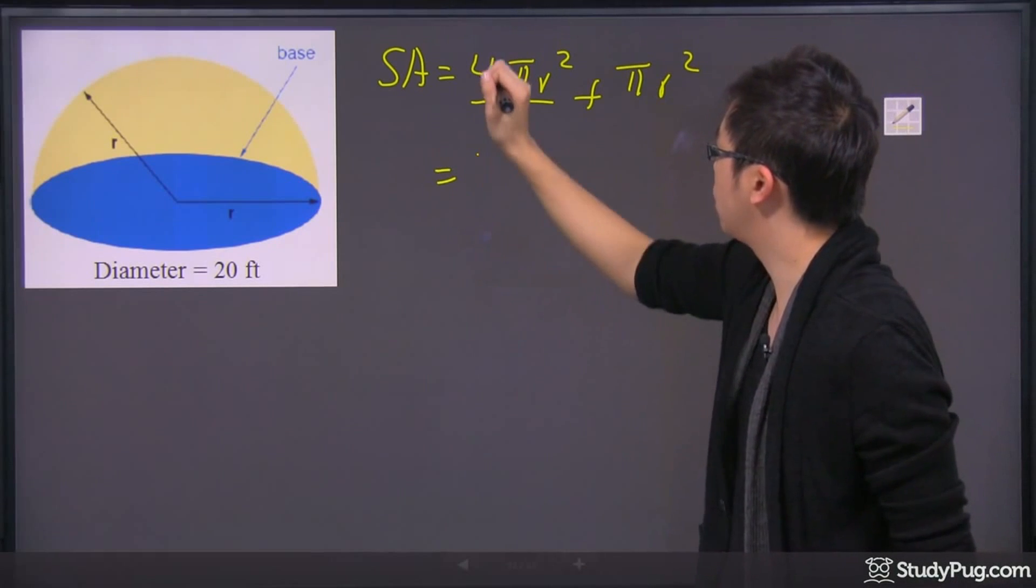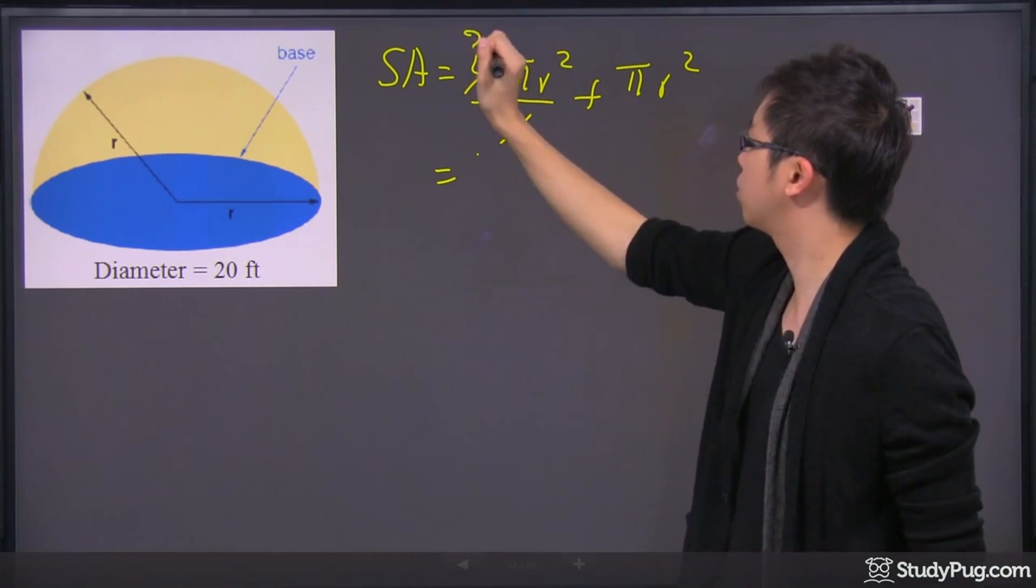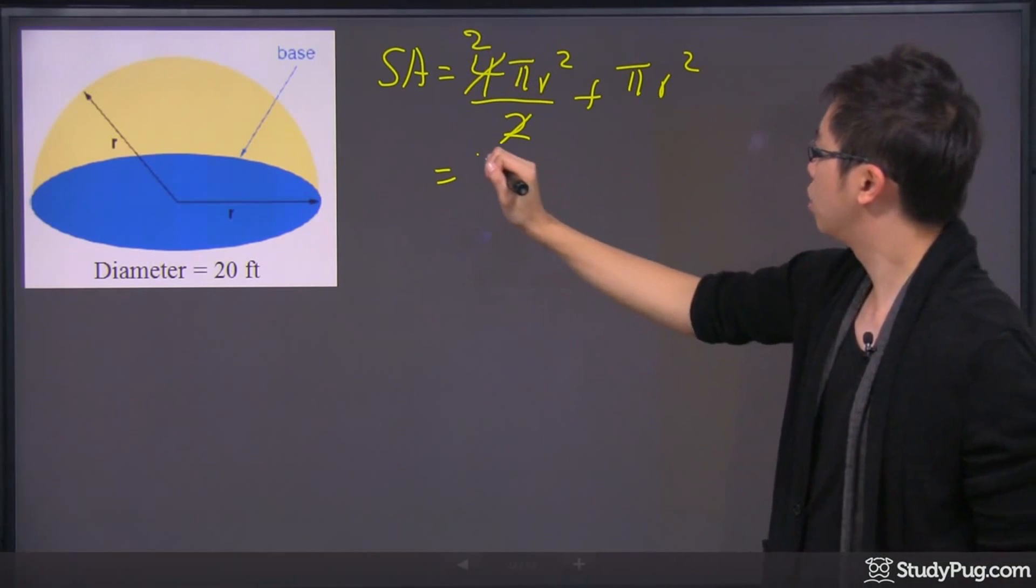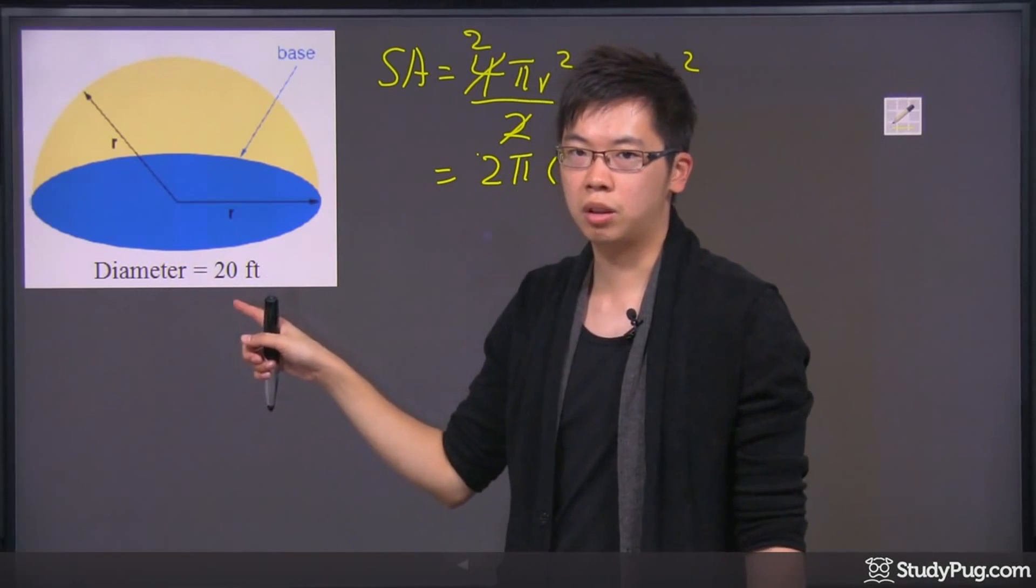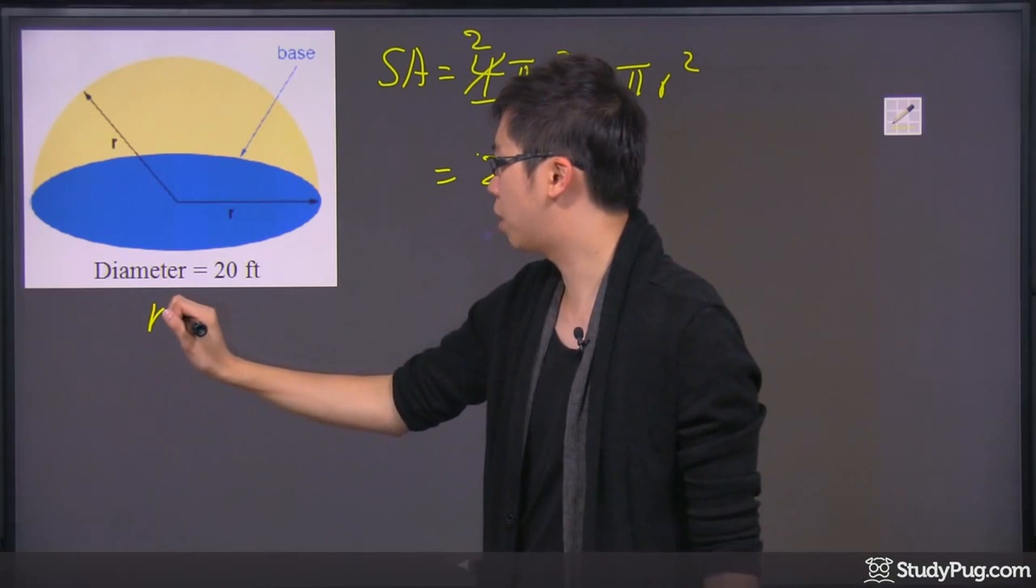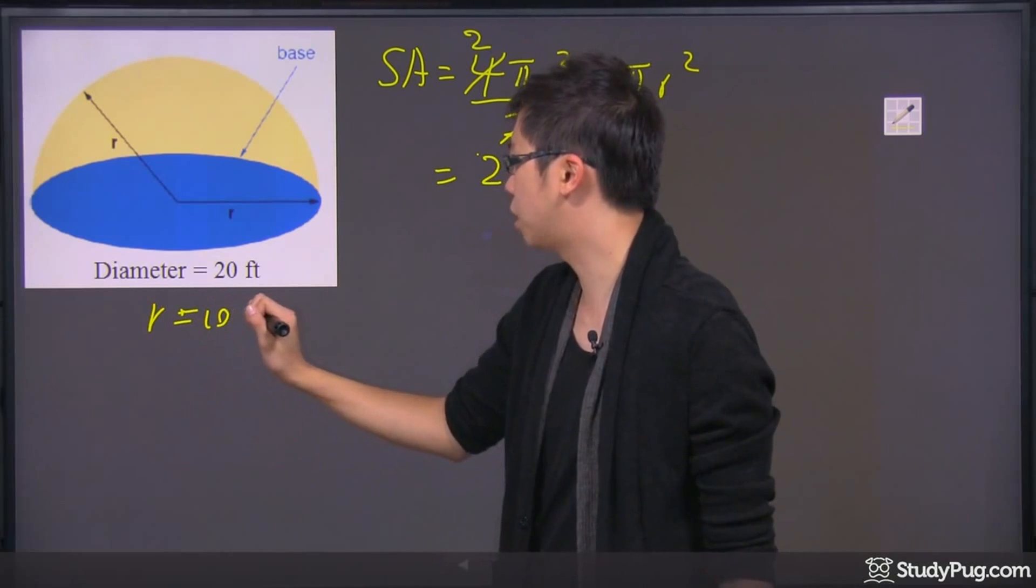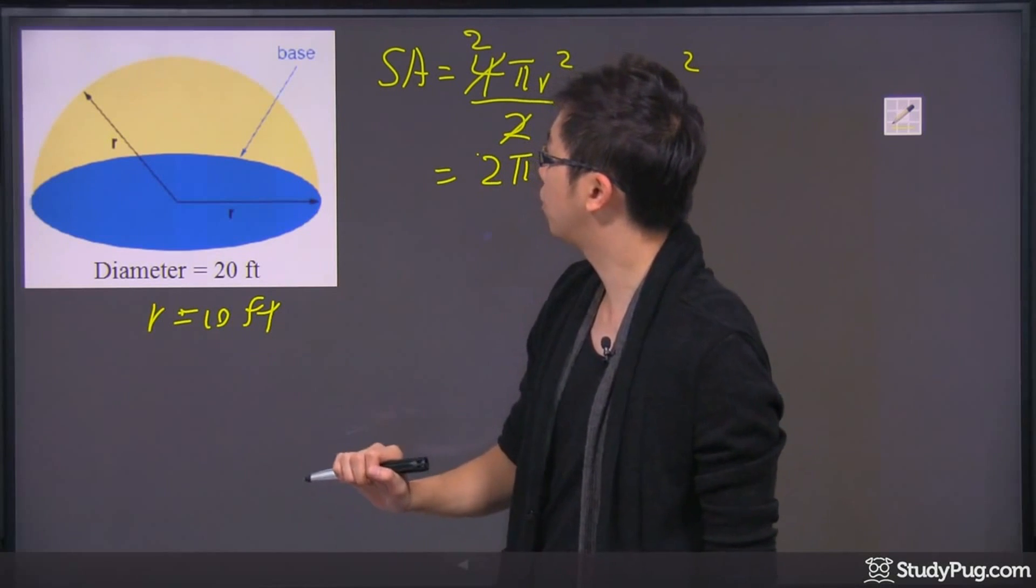So if you fill in the information right here, 4 over 2 is reduced to 2 over 1, so it's just 2 times π times the radius. Now, this is a diameter - it's 20, right? So the radius of the bottom should give you just 10. Make sense? And that's 10 feet right there.